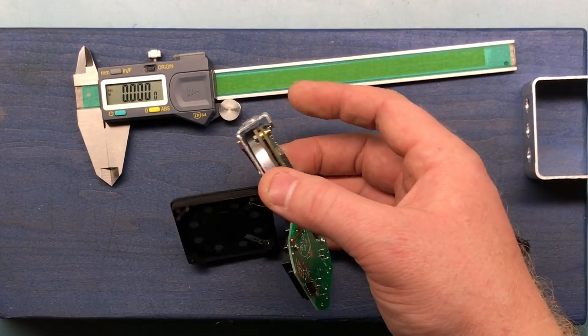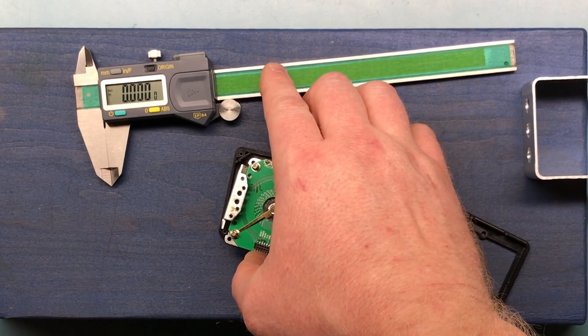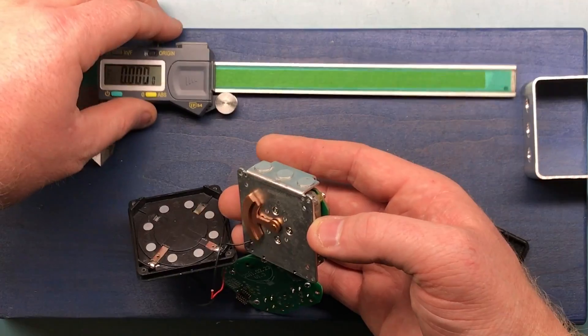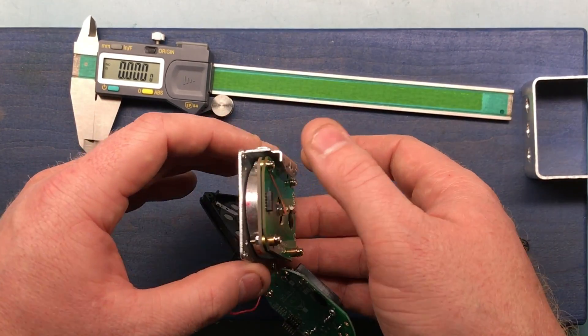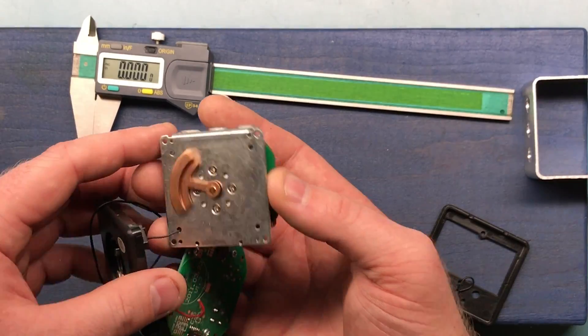But yeah, the encoder in this isn't much different than this, other than instead of a linear position, it's measuring the angular position with a pretty well-made little pendulum.